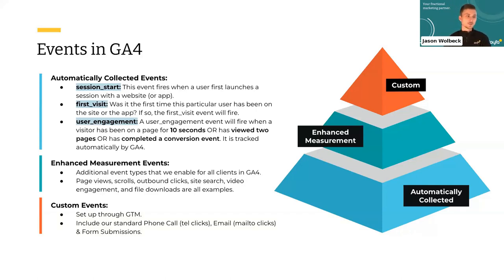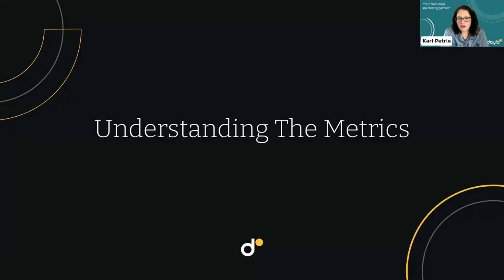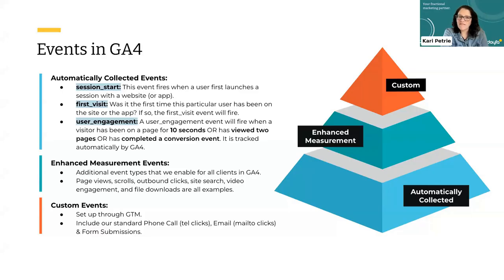Google has made it a lot easier to set up some of these. Those enhanced measurement events you can enable really easily — just toggle on a switch within the platform. Prior in Universal Analytics, it was more difficult to set up goals for file downloads or video engagements. This is where having a strong attribution strategy for your business is really important — going through your website and figuring out what do you want to measure? What's important for you to know that people are engaging with? If you have a ton of videos that you've put a lot of money into creating, you want to see if people are actually watching them. Being thoughtful about what you want to track on your site really comes into play here.